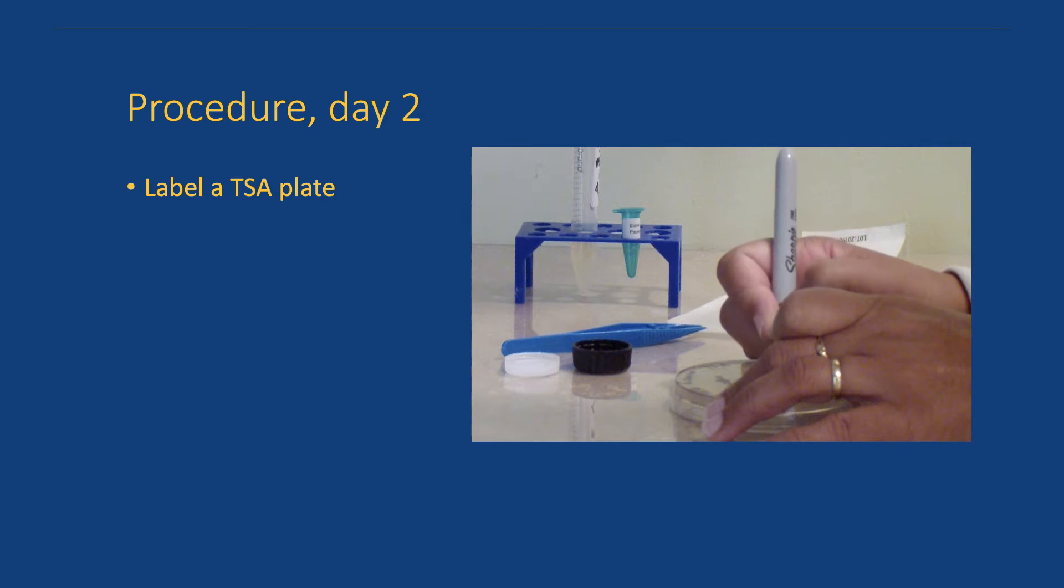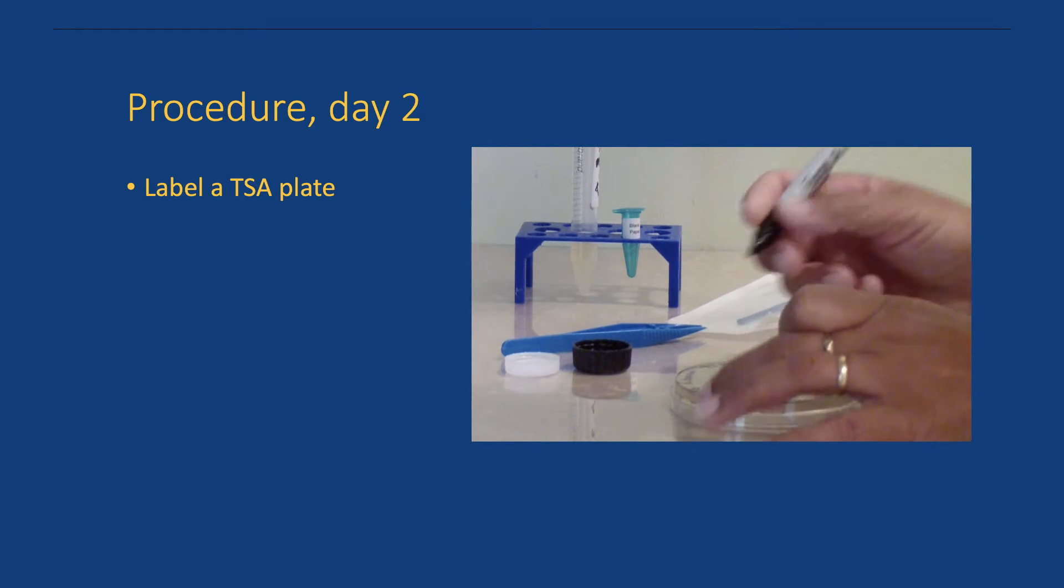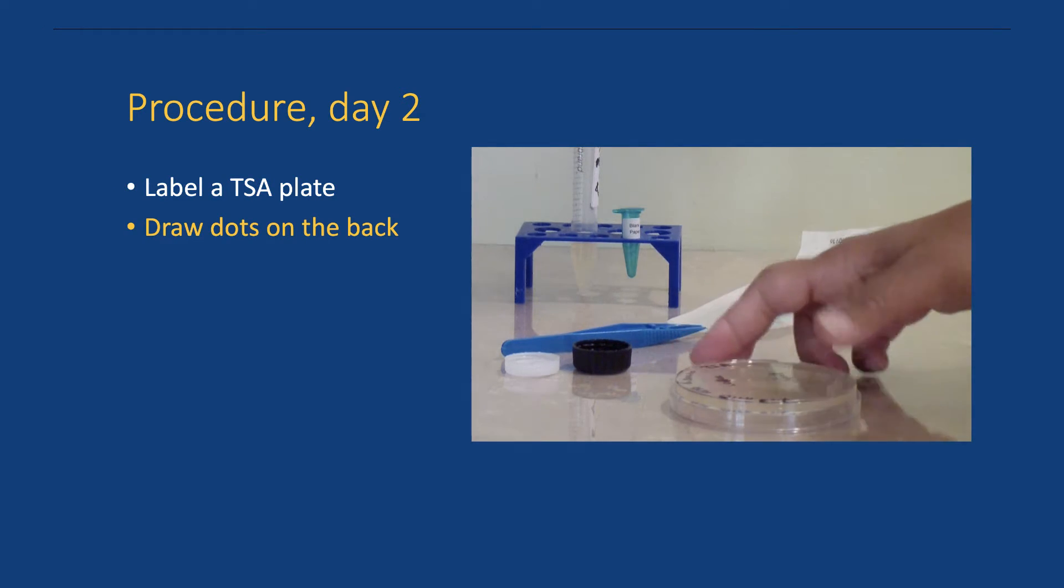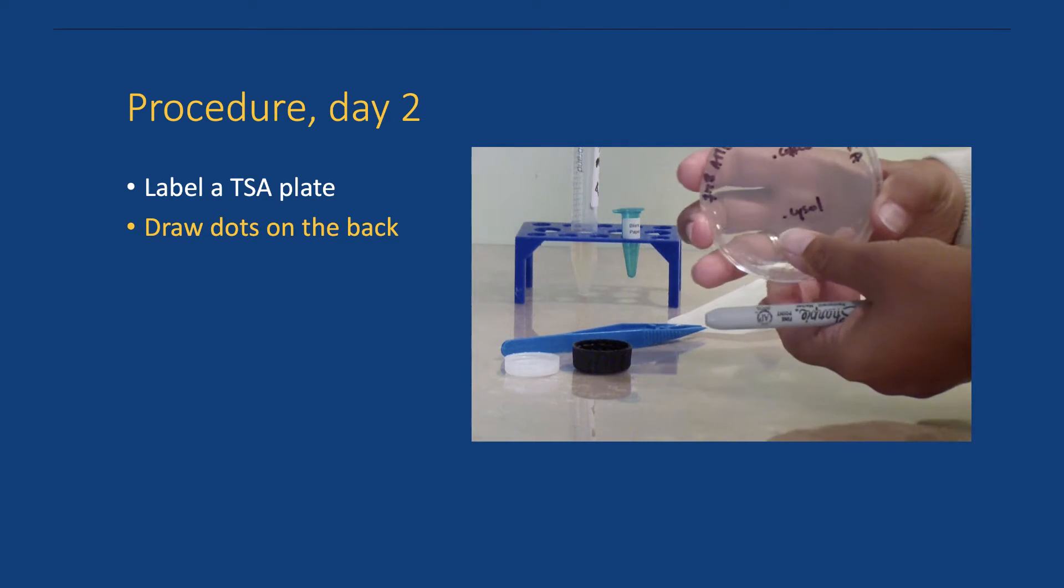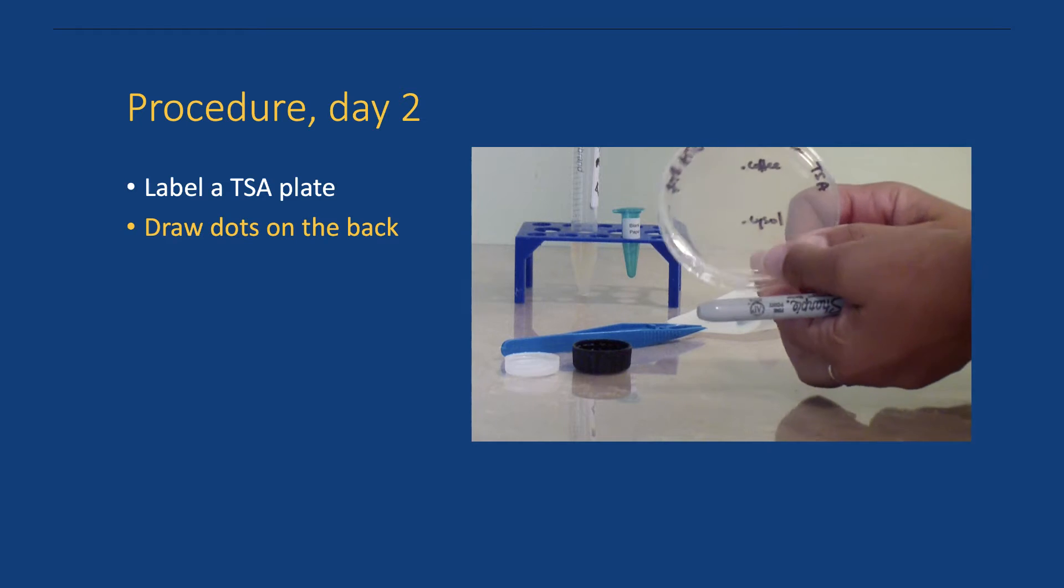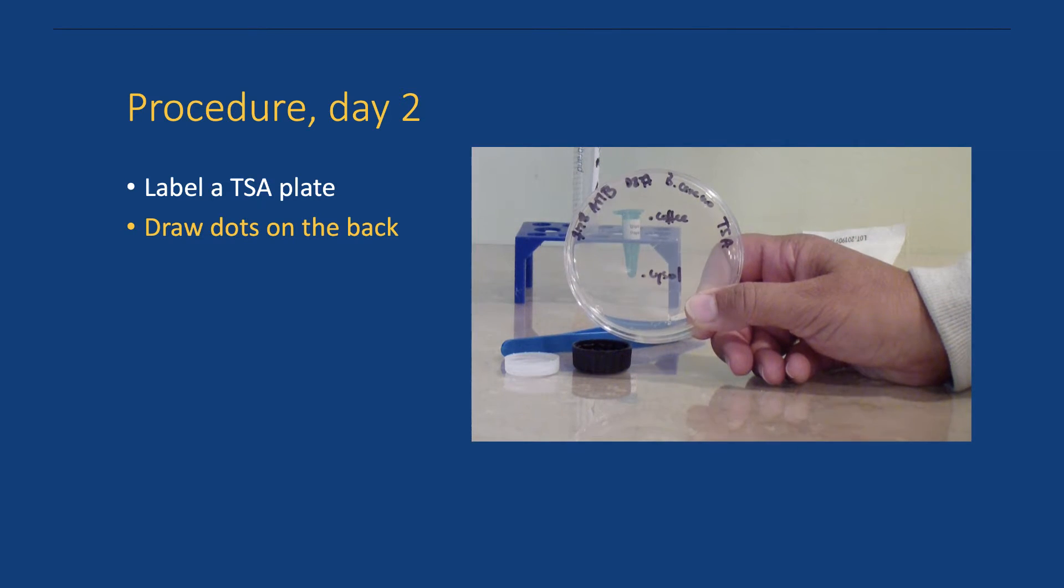On the second day label a TSA plate with the required information. Draw dots on the back of the plate. This is where the discs will go. Use at least two discs, but you may use all the discs if you want. Spread the dots out evenly over the back of the plate.